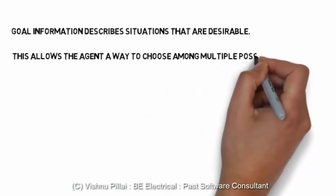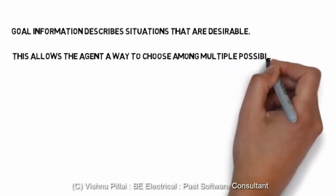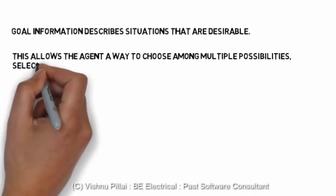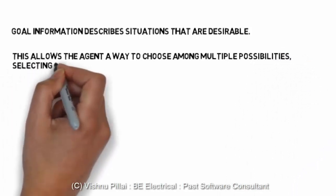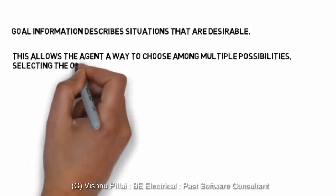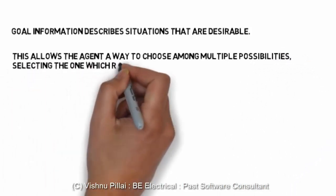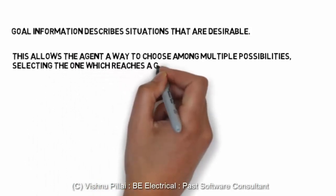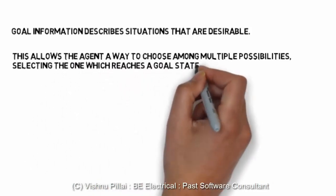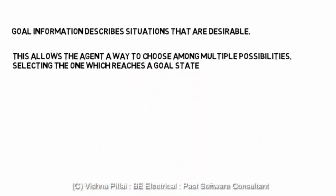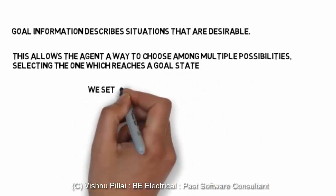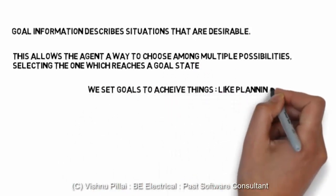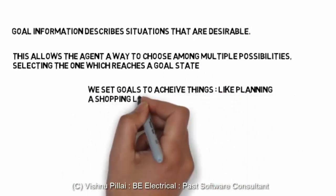The goal information describes situations that are desirable. This allows the agent a way to choose among multiple possible actions and multiple possible outcomes, and it will select the one which reaches a goal state — the action that will enable us to reach the goal we set.